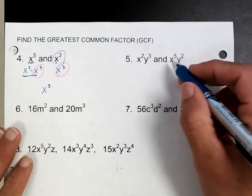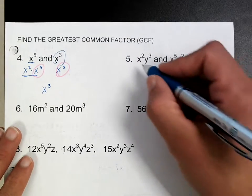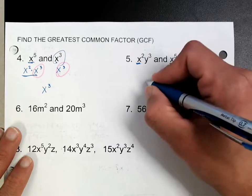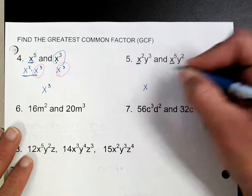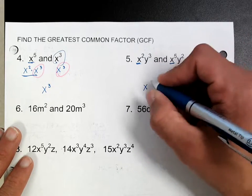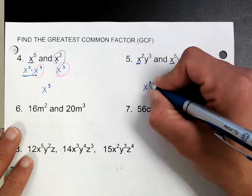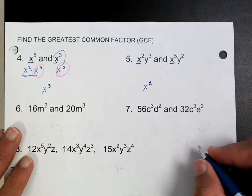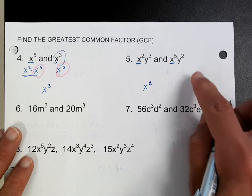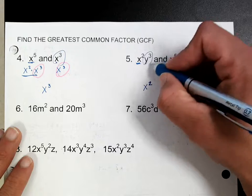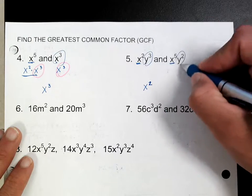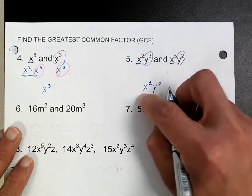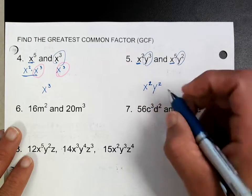So when you see something like this, look at those two variables. Which one's smaller? I would say x squared is the smallest one. Then look at the y's — which one's smaller between those two y's? It's y squared. So x squared times y squared is actually my greatest common factor.